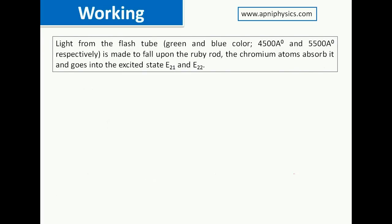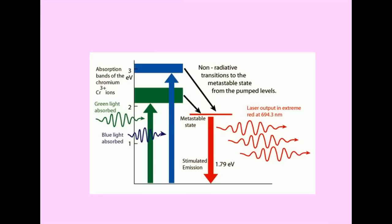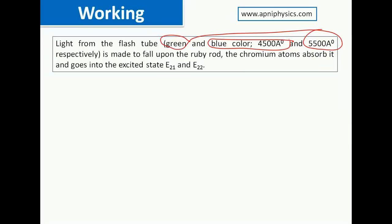For working, two wavelengths from the xenon flash lamp are used: green light at about 5500 Ångströms and blue light at about 4500 Ångströms. These two wavelengths are absorbed by the ruby crystal, causing the chromium ions to go into two excited states corresponding to E21 and E22.